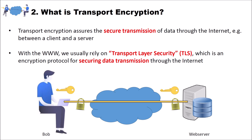Here we have the internet as a cloud, and we want to send data from Bob to a web server — for instance, a request — and the web server will answer with the web page. Both parties agree on a key — here the yellow key — for instance with the Diffie-Hellman key exchange, or they use some kind of asymmetric encryption and certificates. Using this key, they encrypt the data. Bob encrypts his messages, the messages go encrypted through the internet, and the web server decrypts and reads the messages. Then the web server encrypts the reply with the same key, sends the data back to Bob, and Bob decrypts the data and can view the web page. This is Transport Layer Security and Transport Encryption.